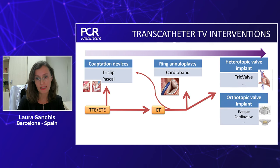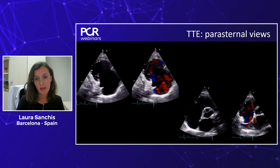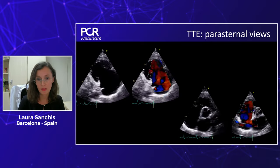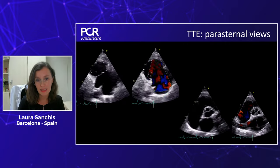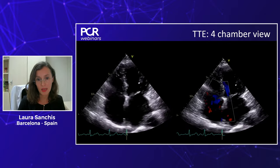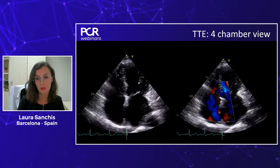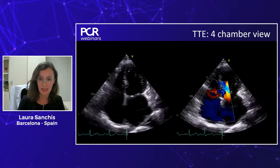We can do a step-by-step approach to these devices. We need to start always with an echocardiography, and I'll present how to do a standardized echo of patients with tricuspid regurgitation. We always start with a TTE — it's the first approximation for TR. It's important to do all possible views: the parasternal long axis and short axis view, then the four-chamber view to know the TR in all planes, the size of the atrium and ventricle, and the severity of TR.